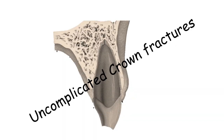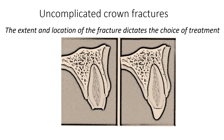First are the uncomplicated crown fractures. Uncomplicated crown fractures are those which involve enamel and dentine without any pulp involvement. The choice of treatment for these depends upon the extent of the fracture and the location of the fracture.